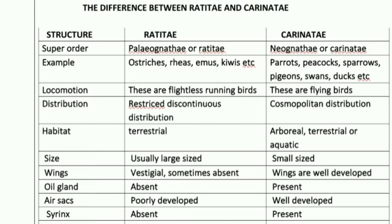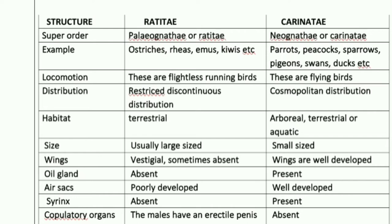Additional examples for Carinate include swans and ducks. For locomotion, Ratitae are flightless running birds, while Carinate are flying birds. For distribution, Ratitae have a restricted and discontinuous distribution — found only in particular areas — whereas Carinate are cosmopolitan in distribution, meaning they can be found worldwide.